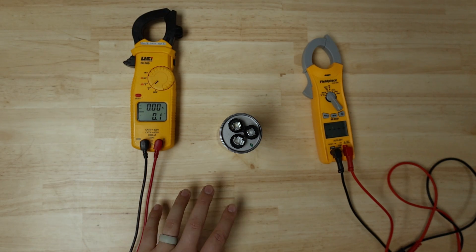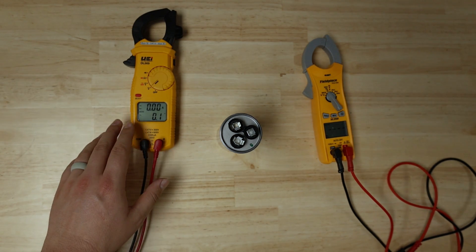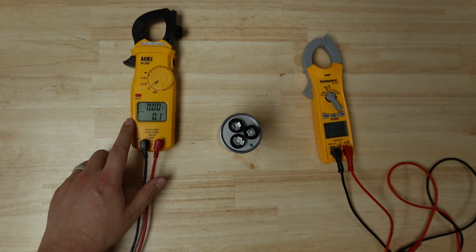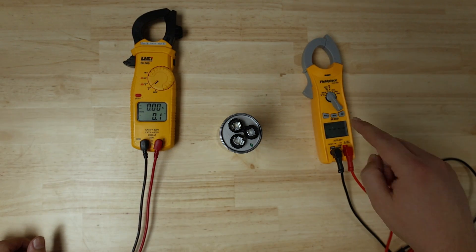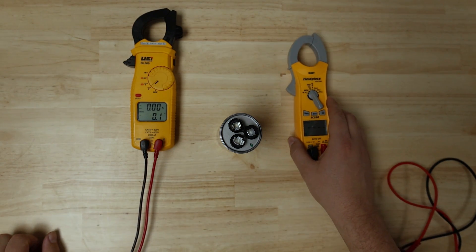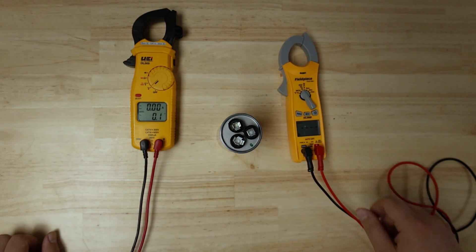We also want to do microfarad readings with these meters. It should be noted, though, that this model of UEI meter does not actually measure microfarads. The Fieldpiece, however, does. If you set it to MFD, which is the same symbol for ohms, you'll be able to measure your capacitor.